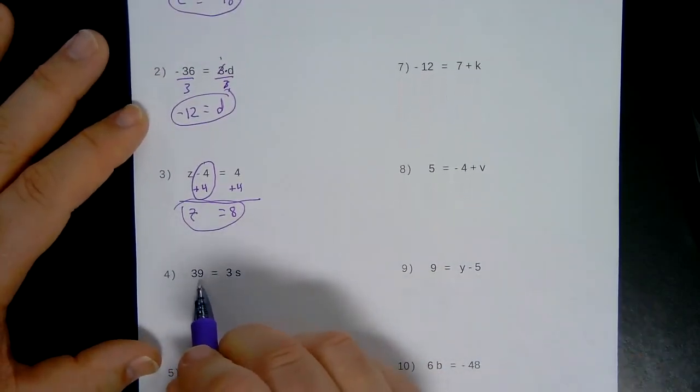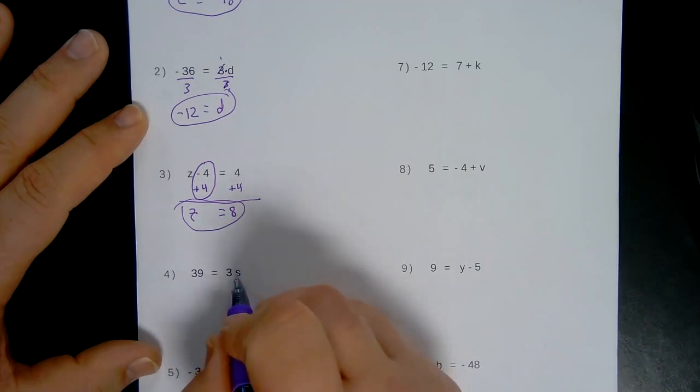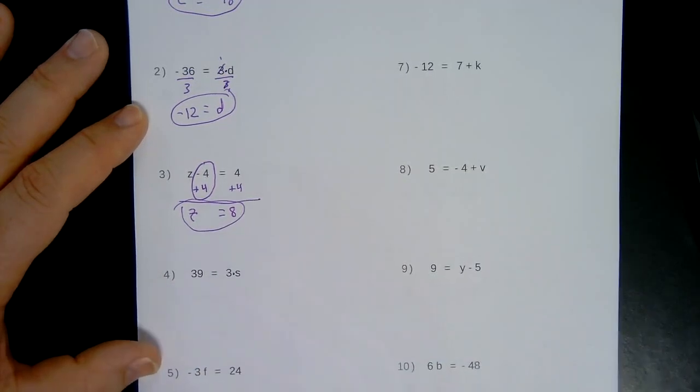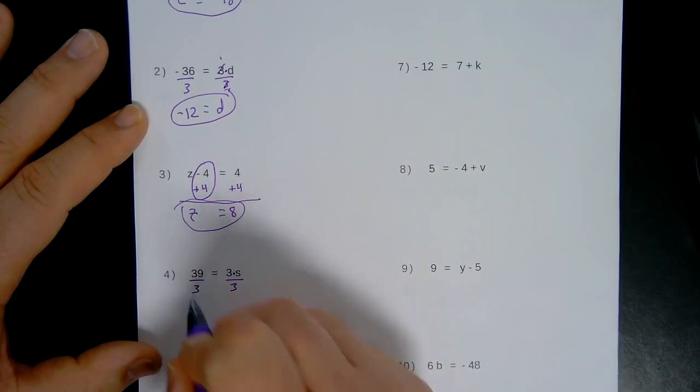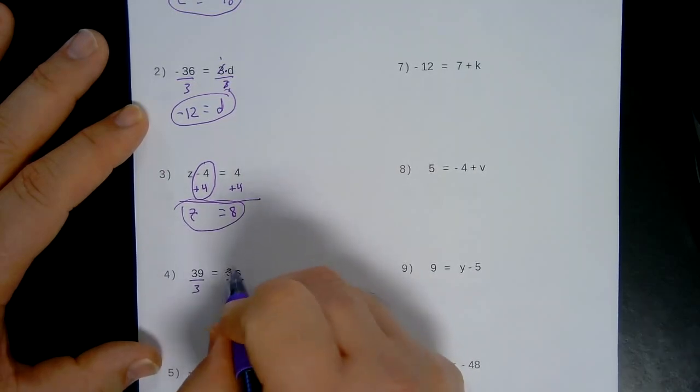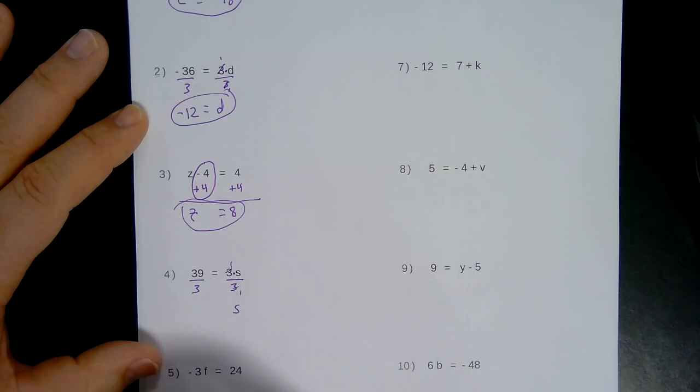Number 4. 39 equals 3 times S. This is a multiplication symbol. You want to divide both sides by 3. So you'll get S. 3's canceled, giving little 1's behind. 39 divided by 3 is 13.